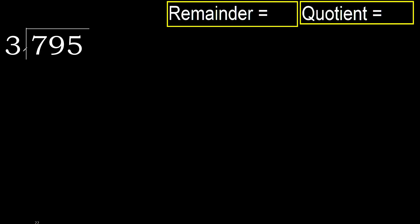795 divided by 3. 7 is not less, so: 3 multiplied by which number is nearest to 7 but not greater? 3 multiplied by 2 is 6, which is not greater. Subtract, then bring down the next digit.